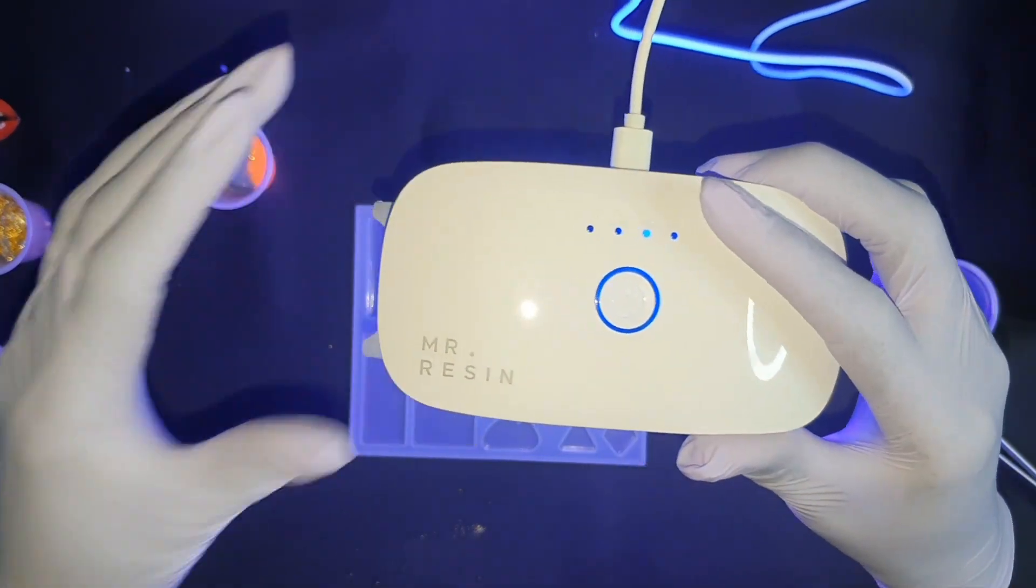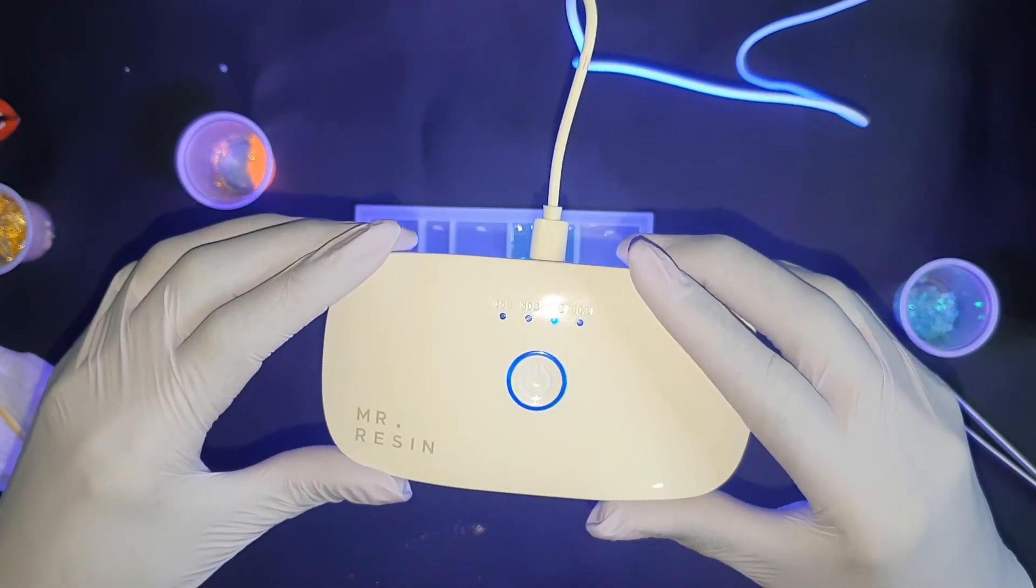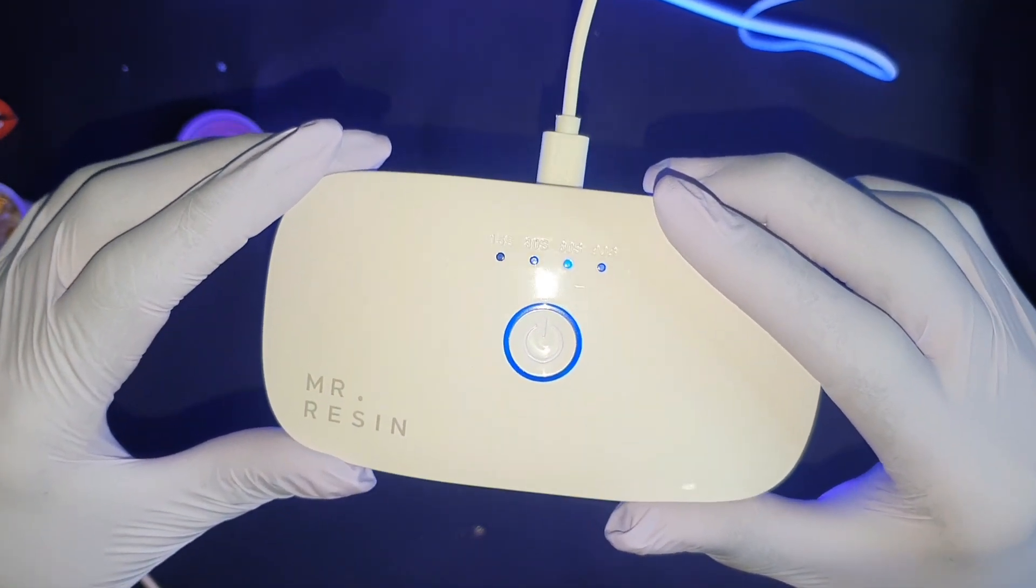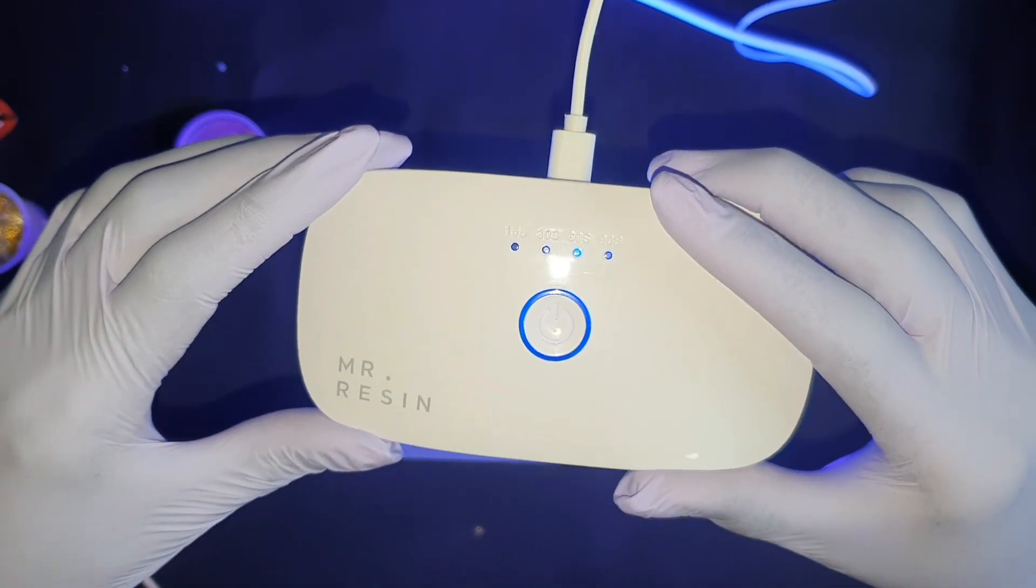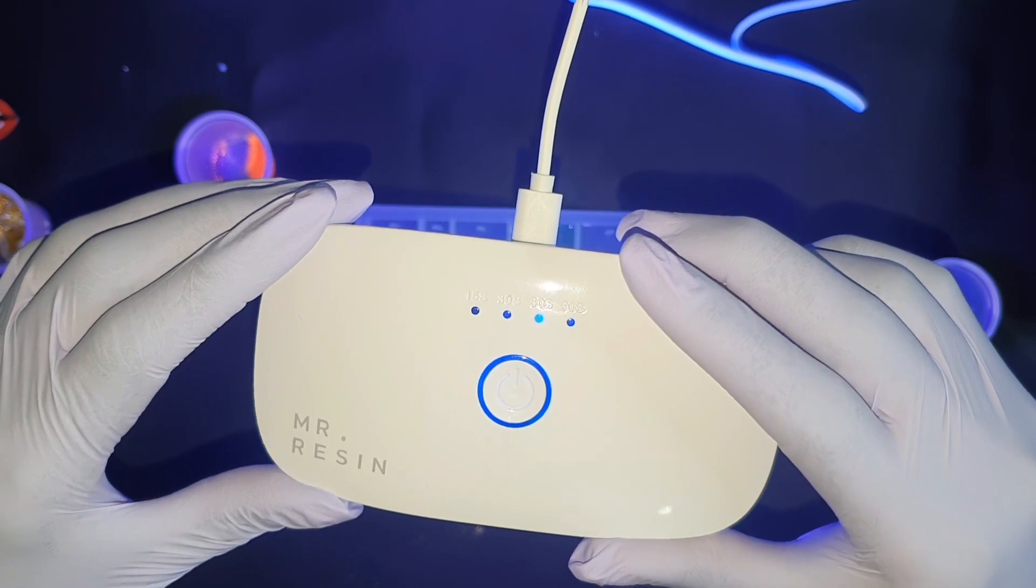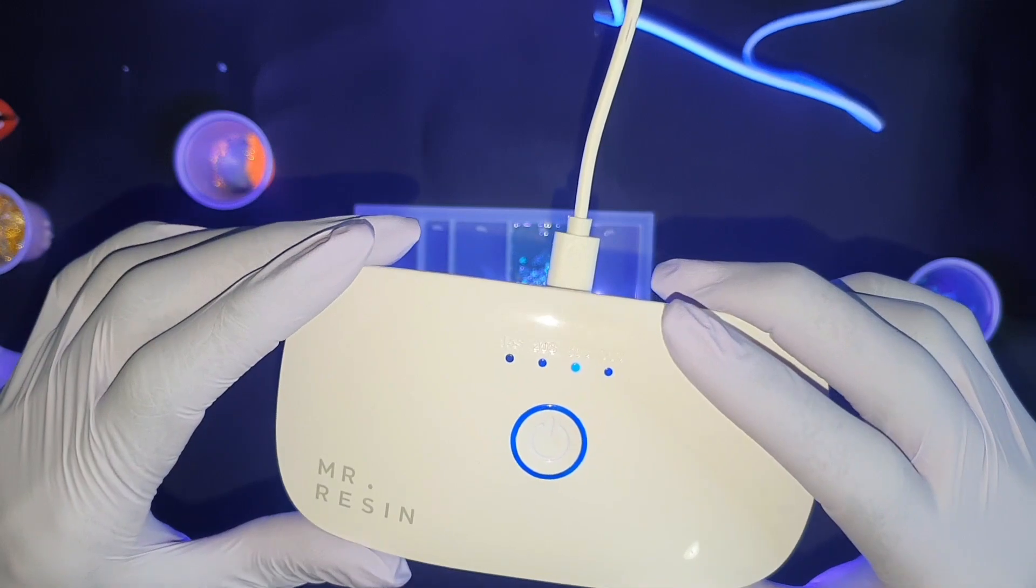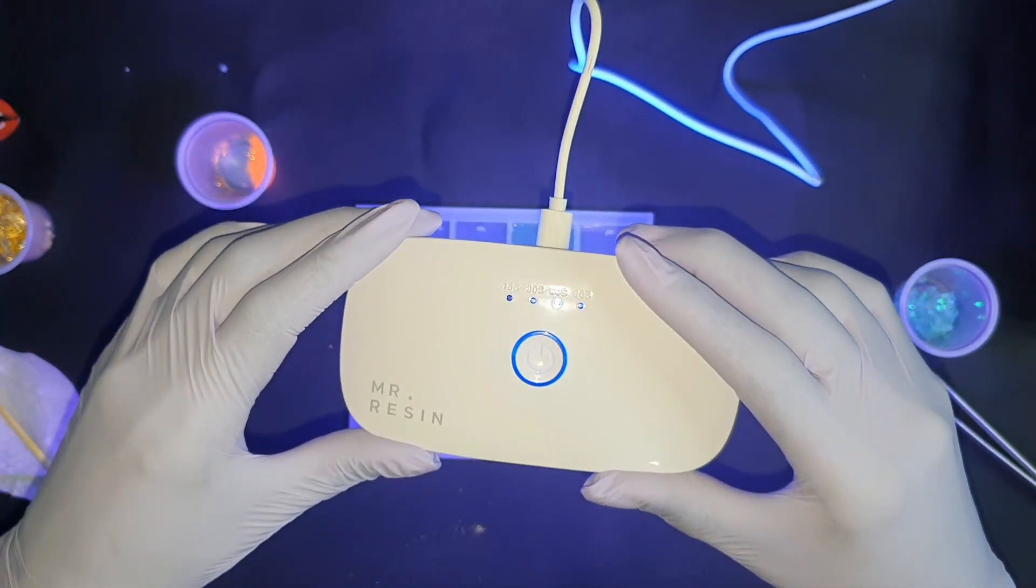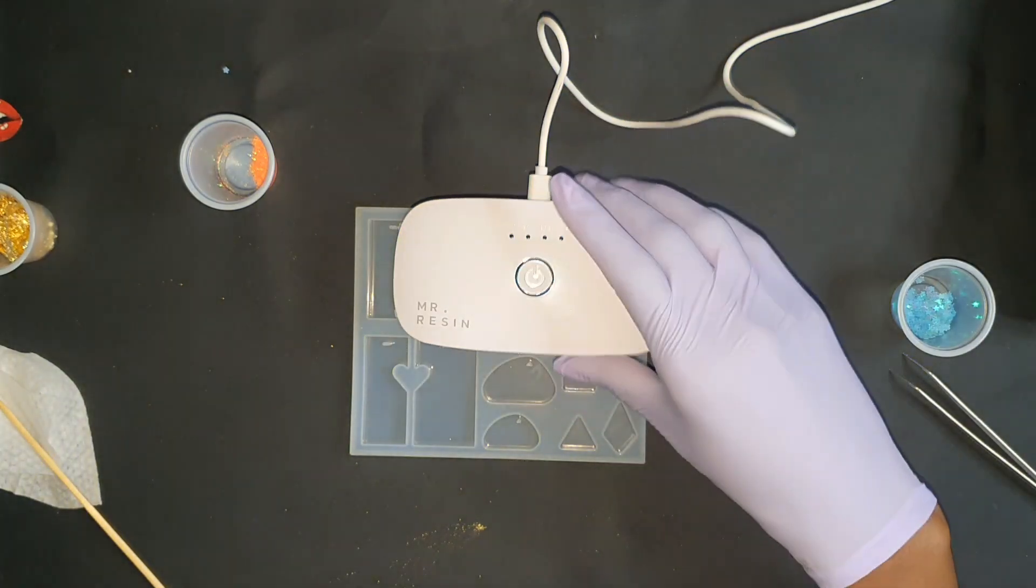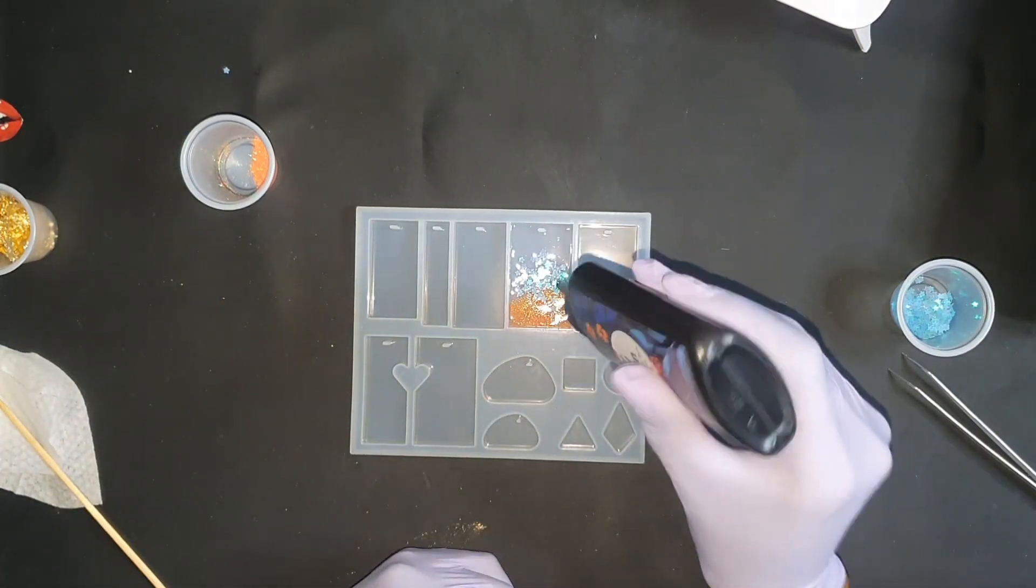Okay, so one of the tricks that I learned when researching resin was to hold your lamp high away from your resin when you're just starting the curing process. And after a couple seconds, maybe 30 seconds or so, you can put it closer. So we're going to give that some time and we're going to add the next layer of resin.